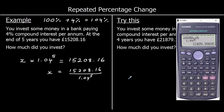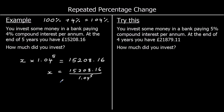With money, we'd usually round to two decimal places, so if I rounded this to two decimal places I would actually get £12,500. So it's £12,500. If we started with £12,500 and added on 4% compound interest a year for 5 years, we will get to £15,208.16.